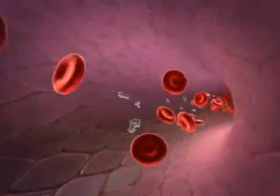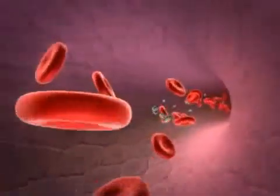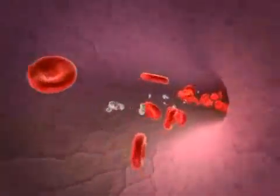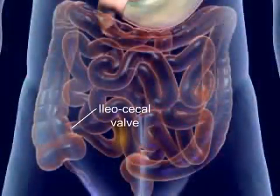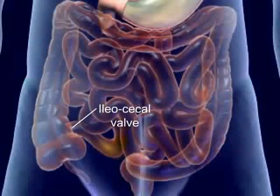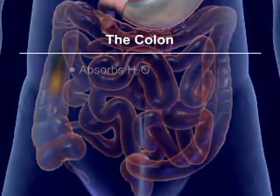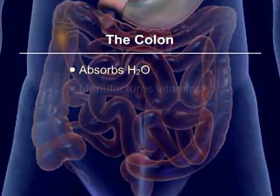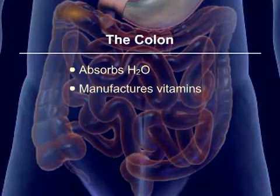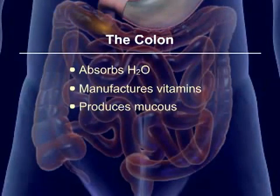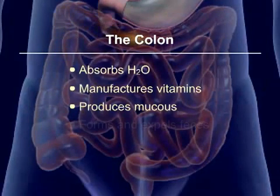The nutrients are now transported by the blood to all the cells of the body. The undigested food reaches the ileocecal valve and enters the large intestine or colon. The colon absorbs water, manufactures vitamins, produces mucus, and forms and expels feces.